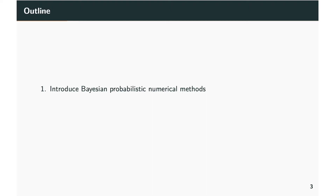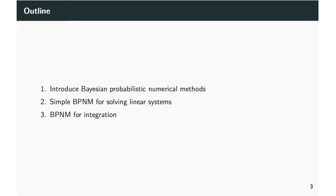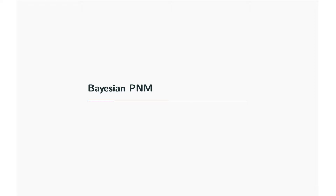This is what the outline of this talk will be. I'm going to start by introducing Bayesian probabilistic numerical methods because I'm sure a lot of people haven't heard of these kinds of methods before. Then I'll introduce by way of an example a simple Bayesian probabilistic numerical method for solving finite dimensional linear systems, before talking about the canonical Bayesian probabilistic numerical method for integration — also called Bayesian quadrature — and then I'll conclude.